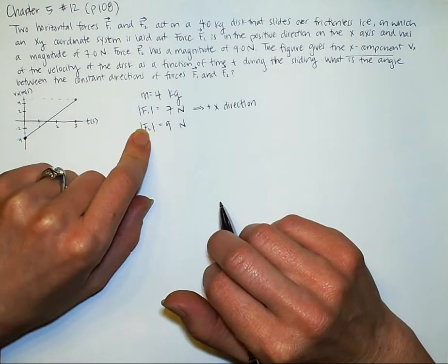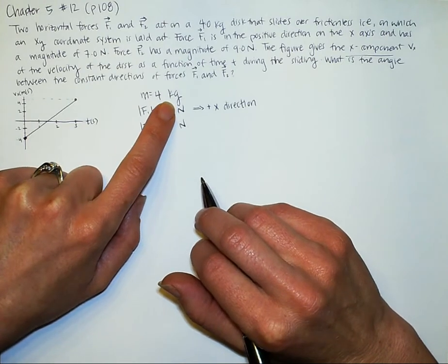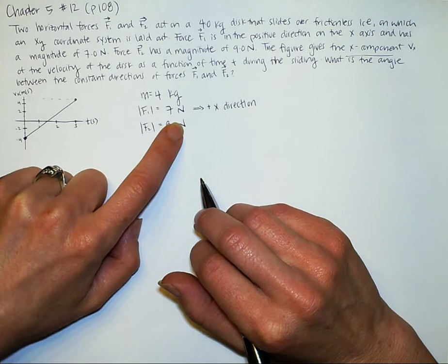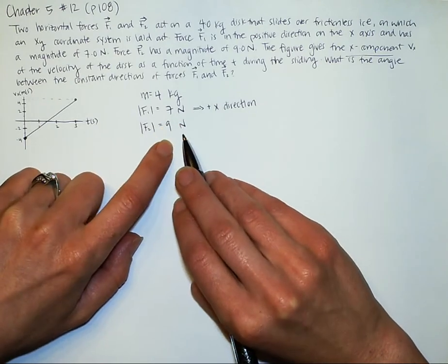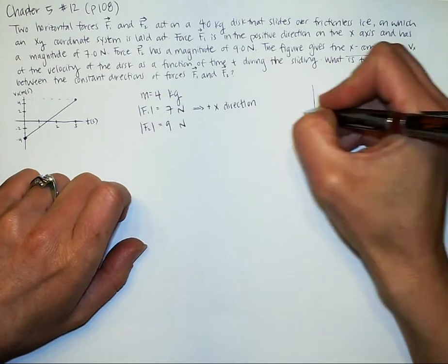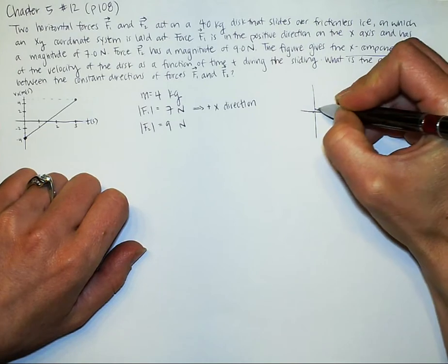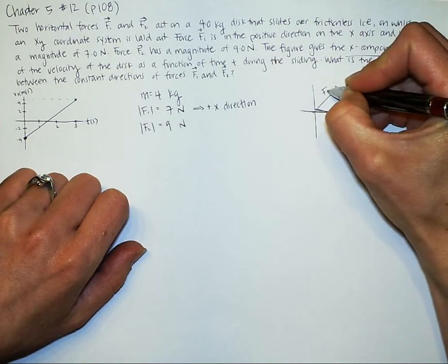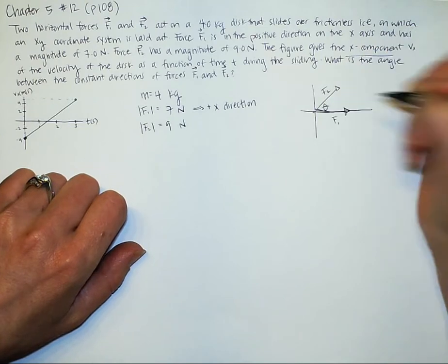So I like to write out what I know. The mass is 4kg of this disc, and then F1 is 7 newtons just in the x direction and F2 is 9 and that's the one that we don't know. So F1 I could sketch right here. F2 is maybe going this way, maybe going that way. We don't really know, but we're trying to find this angle right there.